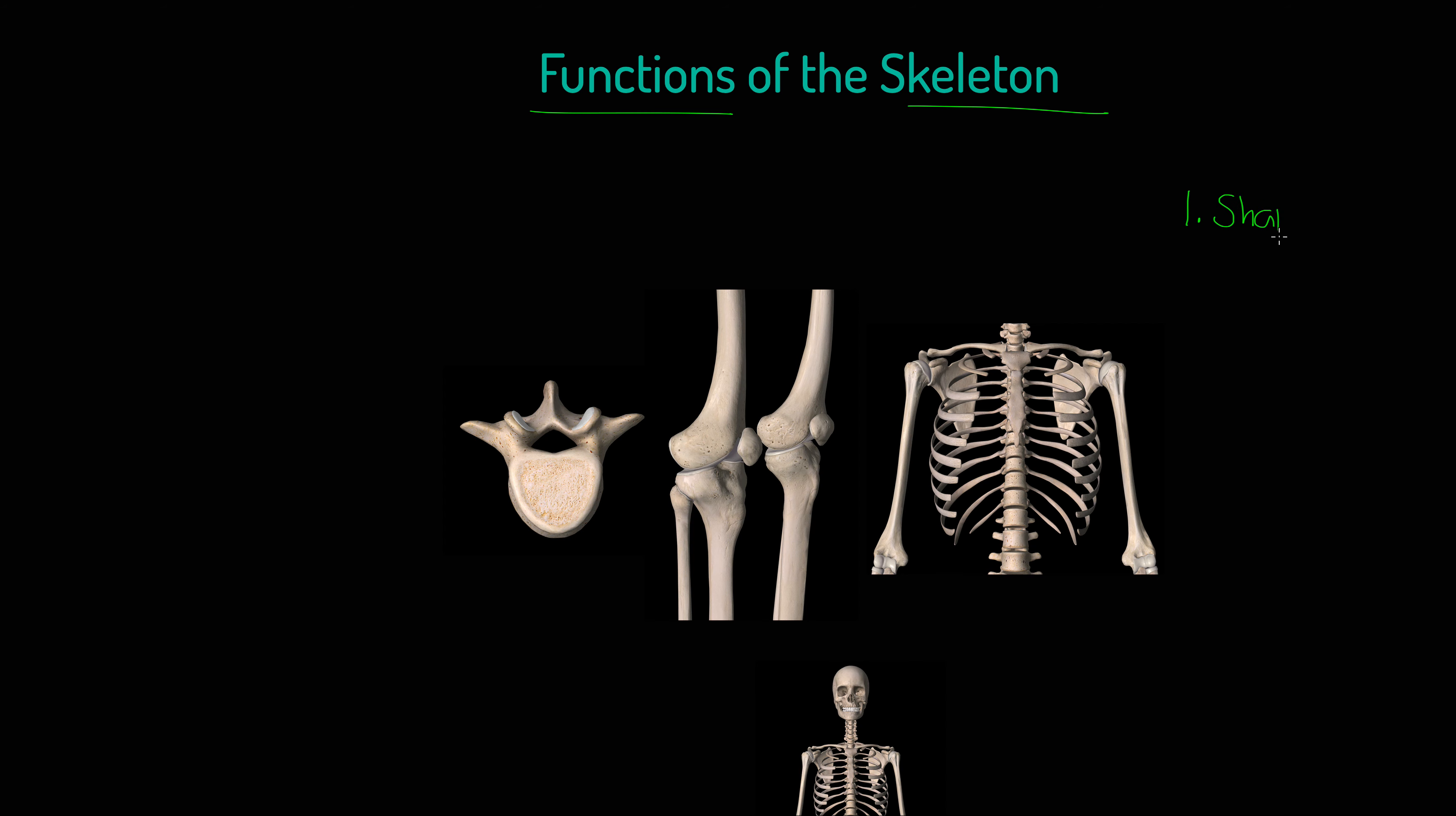First of all, I want to talk to you about the skeleton performing the role of shape and support. A function of the skeleton is shape and support. A couple of things about shape: human beings generally are upright, so we've got an upright shape or an upright walking posture, and that influences how sporting technique is done.